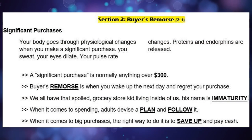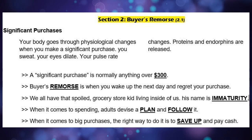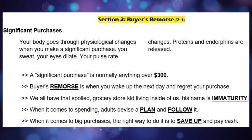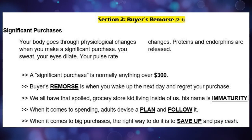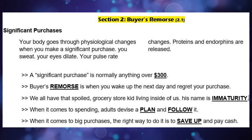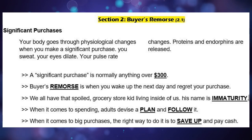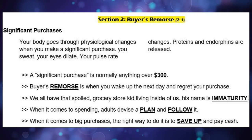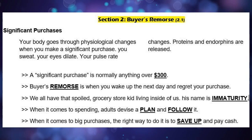Section two: buyer's remorse. Your body goes through physiological changes when you make a significant purchase — you sweat, your eyes dilate, your pulse rate changes, and proteins and endorphins are released. A significant purchase is normally anything over $300. Buyer's remorse is when you wake up the next day and regret your purchase. When it comes to spending, adults devise a plan and follow it; the right way to handle big purchases is to save up and pay cash.